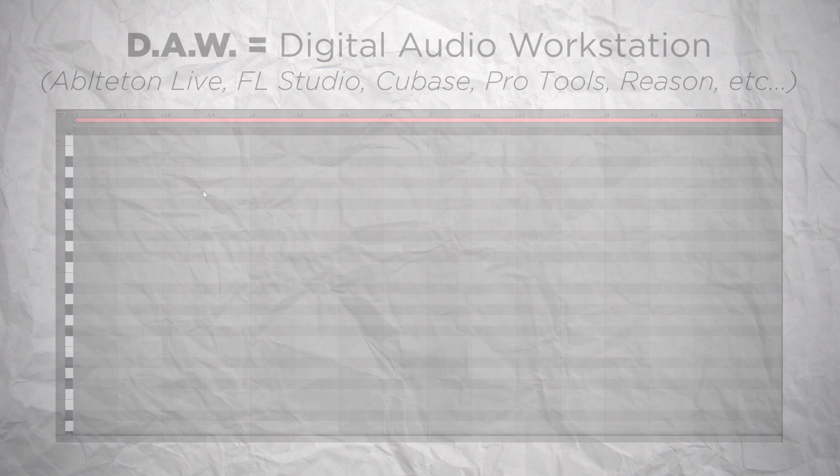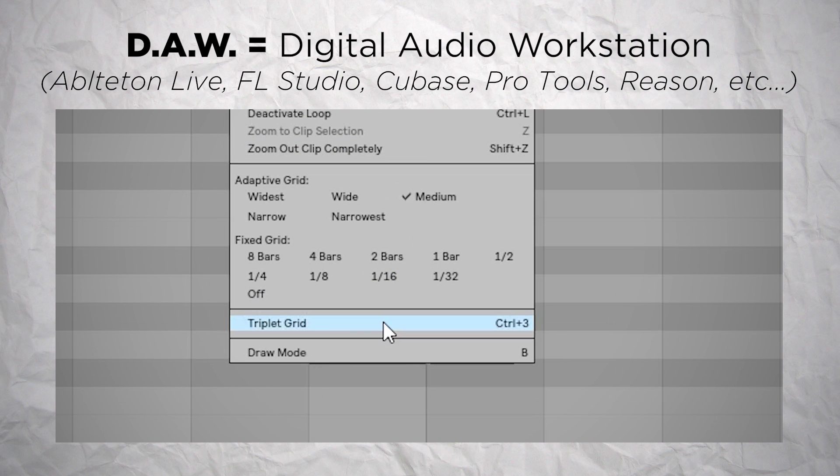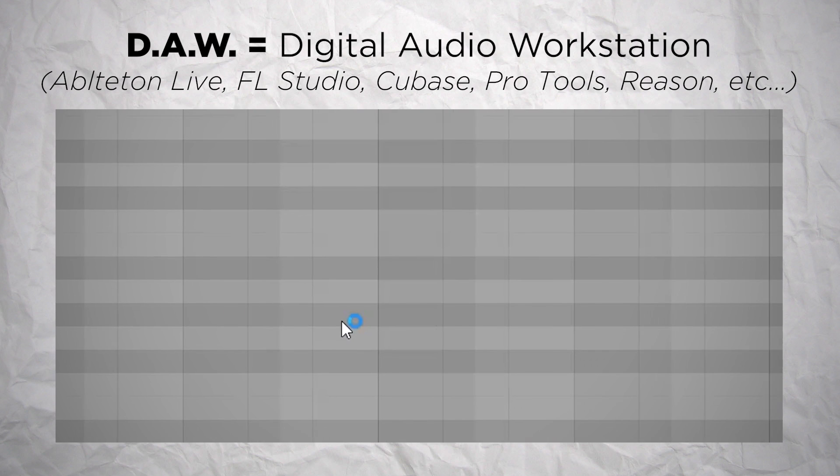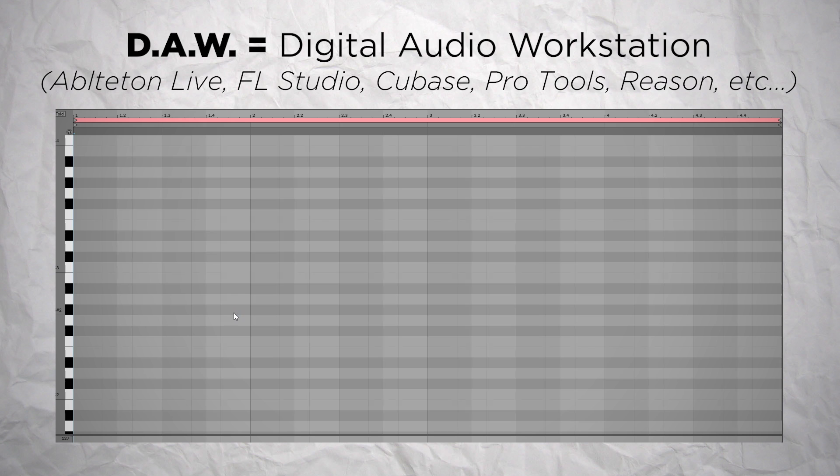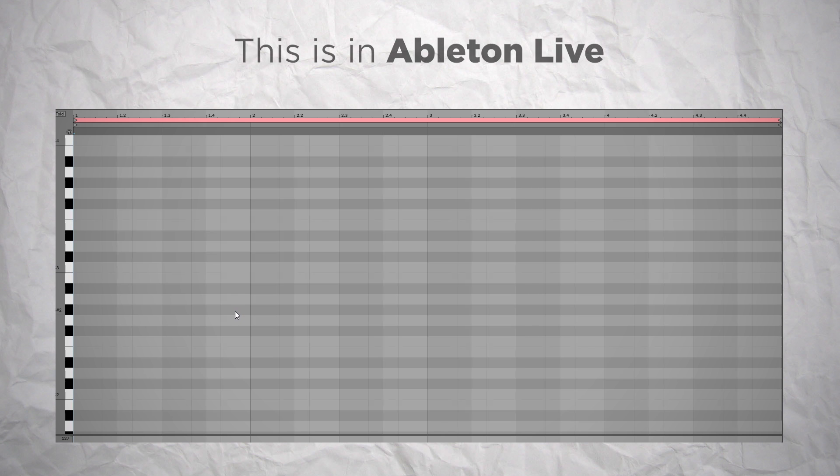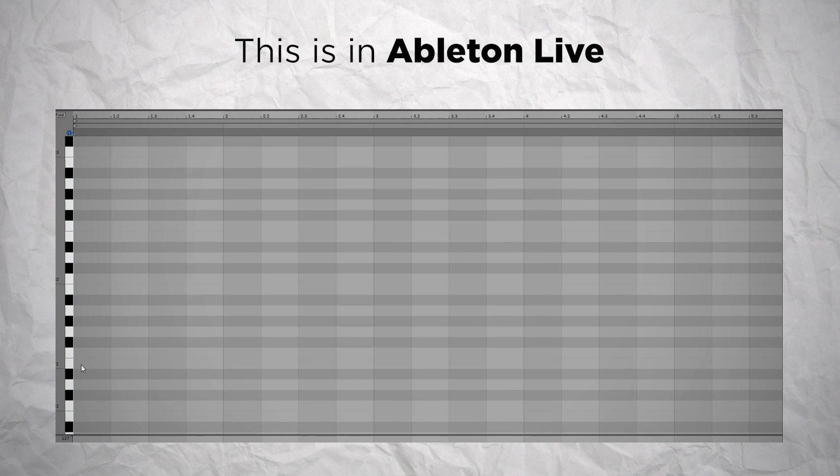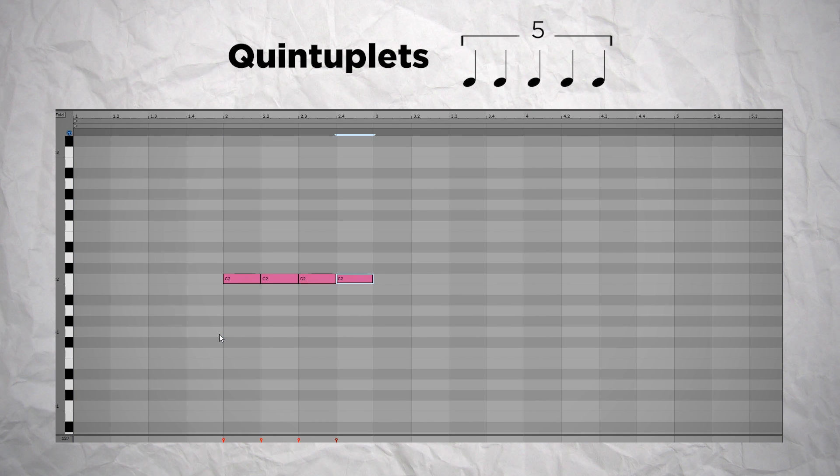A quick note aside, most DAWs allow you to make triplets by editing the time grid, but that doesn't always allow you to make other tuplets. So I'll show you how I do them in my DAW of choice, Ableton Live, and hopefully it would work in a similar way in other DAWs. So for quintuplets, you put 6 notes, the 5 notes of the quintuplet plus 1 note, then select them all and squash them, so the 5 first notes fill the right amount of beats. And then you have a perfect quintuplet that you can then duplicate as you want.